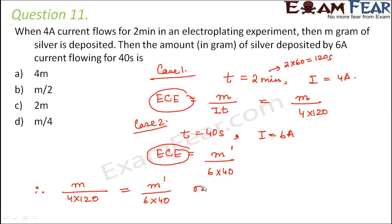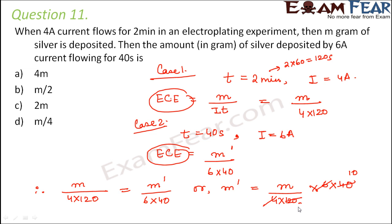So m dash is equal to m divided by 4 into 120, times 6 into 40. Computing: 4 into 10 gives 40, 6 twos are 12, 10 twos are 20 — so m dash is equal to m by 2. The correct option is B.